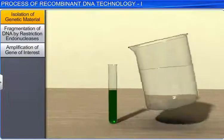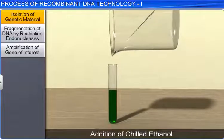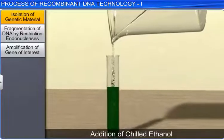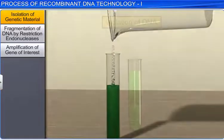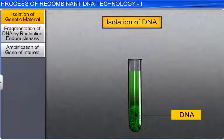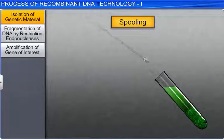Finally, after the addition of chilled ethanol, DNA is isolated as a precipitate. This extracted DNA can be collected using a method called spooling.